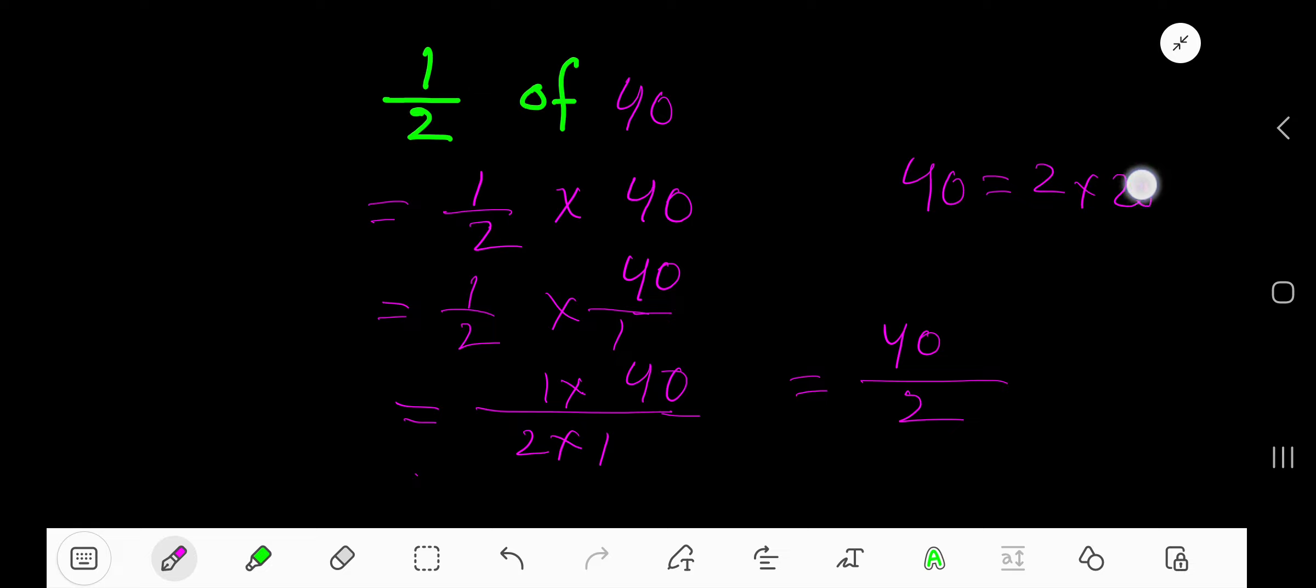2 times 20 equals 40. So 2 and 40 are the factors of 40. And 1 times 2 equals 2. So 1 and 2 are the factors of 2. So common factor is 2.